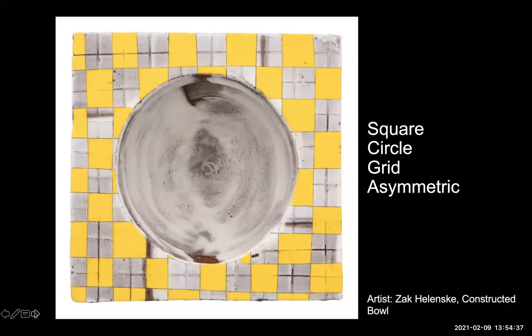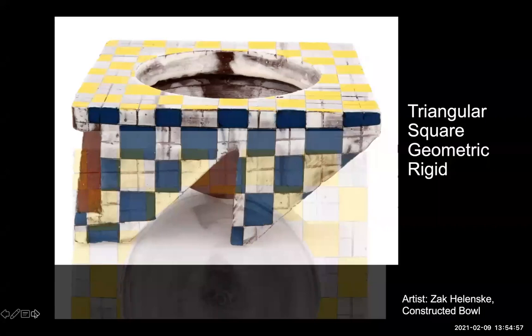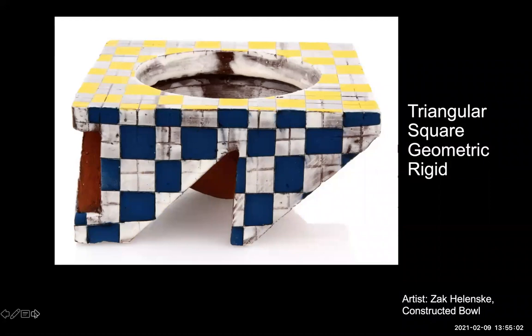Form generally refers to three-dimensional elements. Geometric forms include cubes, spheres, cones, cylinders, etc. Organic forms are all other kinds of forms that are not geometric. Circling back to this image, at a quick glance, it appears two-dimensional. Upon full view, we can observe the form, which shares many of the same descriptors employed under the element of shape. The translation of square, circle, and triangle into cube, sphere, and conical don't exactly fit either. As such, it is fine to utilize the same descriptors — square, circle, and triangle — as long as it is clear that it is in reference to a form and not a shape. The form of this piece is primarily round or circular, yet asymmetrical and organic.